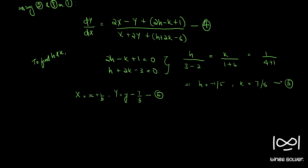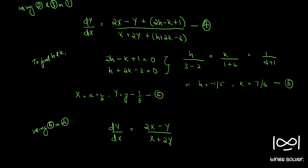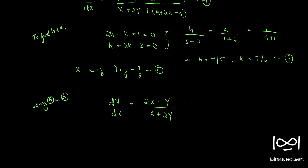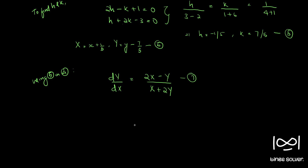Using the values of h and k from Equation 5 in Equation 4, the equation becomes dY/dX equals (2X minus Y) by (X plus 2Y). Let's call this Equation 7. Equation 7 is a homogeneous equation since it can be written as a function of Y/X — if we divide numerator and denominator by X we get dY/dX as a function of Y/X.